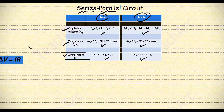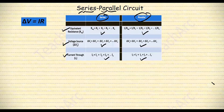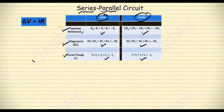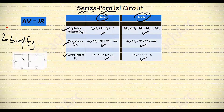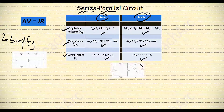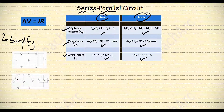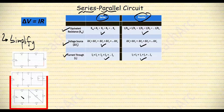By now, we should know the relationship between voltage, current, and resistance, which is: voltage is equal to current times resistance. The first method to solve a series-parallel circuit is simply to simplify the circuit and turn it into just a series circuit. However, that is easier said than done, so some complex circuits might be difficult to simplify this way.